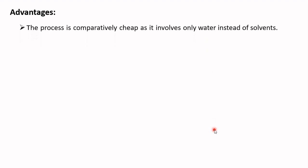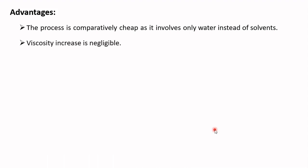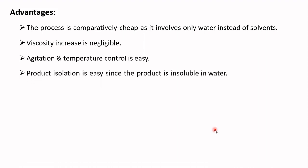The advantages of suspension polymerization include: the process is comparatively cheap as it uses water instead of solvents; viscosity increase is negligible; agitation and temperature control are very easy; and product isolation is easy since the product is insoluble in water.